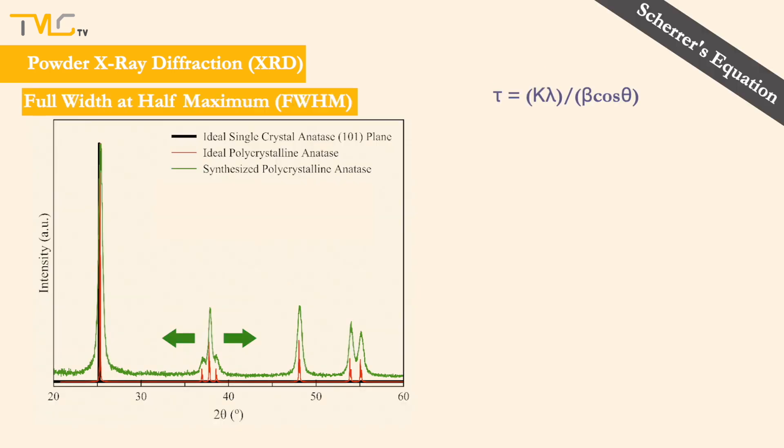Scherrer's equation is used for the calculations of average crystallite size. Yet, before moving forward, we would like to suggest the utilization of Scherrer's equation for qualitative comparison of crystallite sizes, instead of quantitative comparison. Now, let's go back to Scherrer's equation, which is τ = Kλ / (β cos θ).